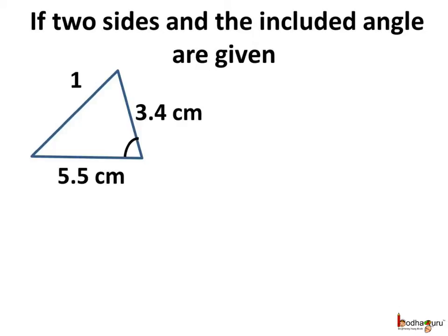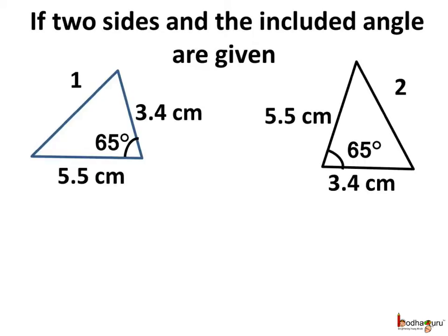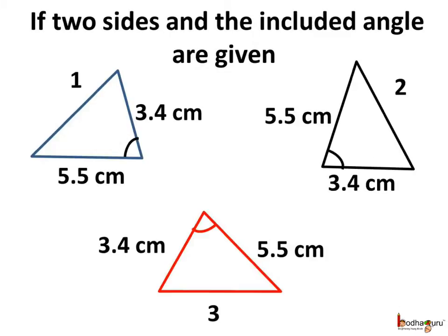First, we draw a triangle with 5.5 cm and 3.4 cm as the two sides and the included angle between them is 65 degrees. Next, we draw another triangle — triangle 2 — where the 3.4 cm side is the base and it makes a 65 degree angle with the 5.5 cm side. Then we draw another triangle with 5.5 cm and 3.4 cm sides and a 65 degree angle between them. They are looking different.